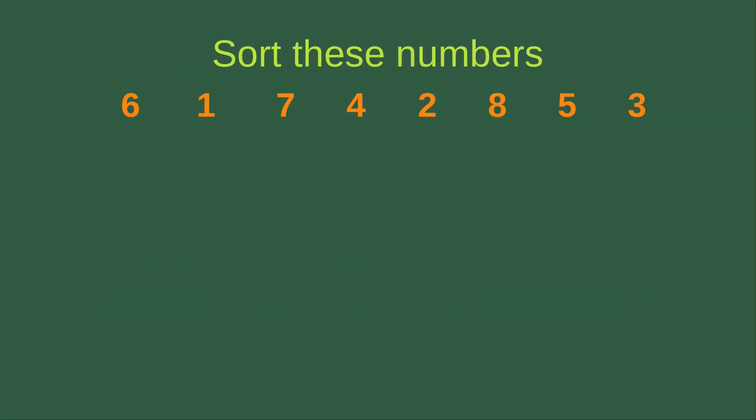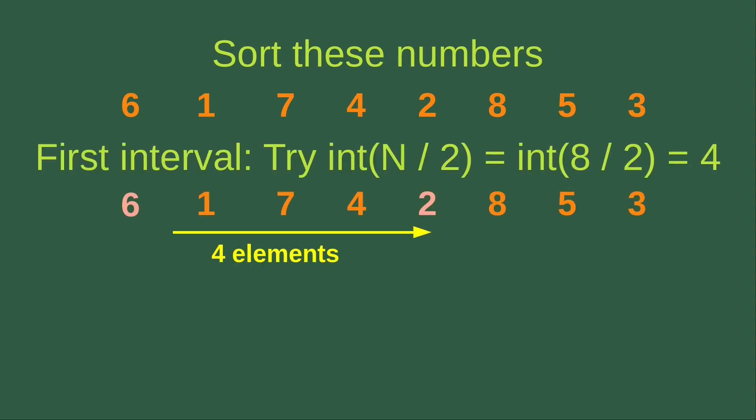Let us see an example. Suppose we want to sort these numbers. How can we do that by using shell sort? First, we need to determine the intervals to use. The first interval can be determined by dividing the number of elements by 2 and taking the integer part. Now there are 8 elements, so n equals 8.